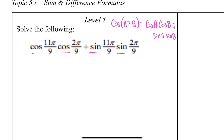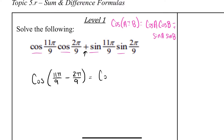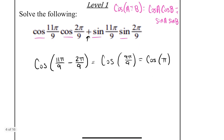I definitely know I'm working with a cosine problem, and I additionally know that it's going to be the opposite of the sign. Cosine is always the opposite of whatever sign is inside. So this is going to end up becoming cosine of 11π/9 minus 2π/9. That's going to simplify to cosine of 9π/9, and 9π/9 simplifies to cosine of π — those two nines cancel each other out.